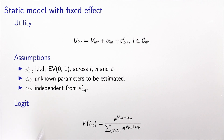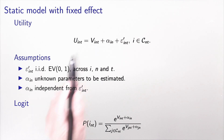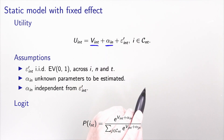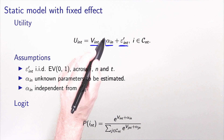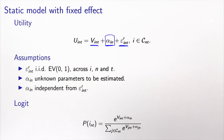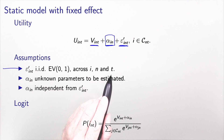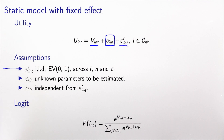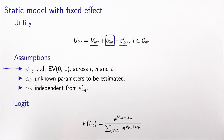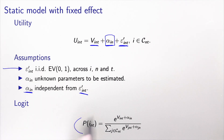The utility function for alternative i, individual n, and time t consists of a deterministic part, the agent effect alpha_{i,n}, and the remaining error term epsilon prime. In the fixed effect case, alpha_{i,n} is a set of parameters to be estimated. We assume that epsilon prime is i.i.d. extreme value across i, n, and t. Because we have introduced the agent effect, this assumption is more valid than before, and we require that the alphas are independent from the error terms. We obtain a logit model where these extra parameters play the role of an alternative-specific constant for each individual.